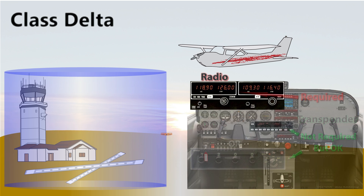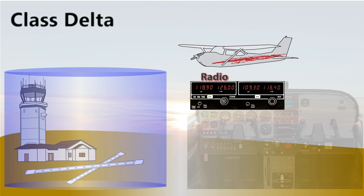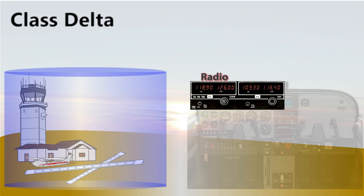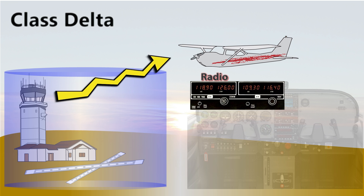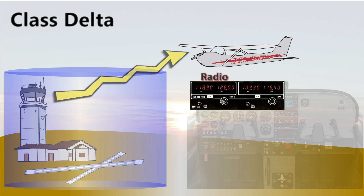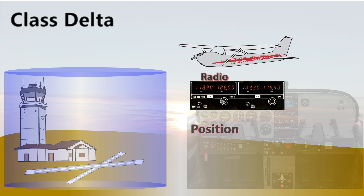Since a working radio is the only required equipment, it is no surprise that in order to enter, depart, or operate within Class D airspace, two-way radio communication must be established with air traffic control. When approaching a Class D airport or airspace, the pilot should contact the control tower on the published frequency with their position, altitude, destination, and any requests.